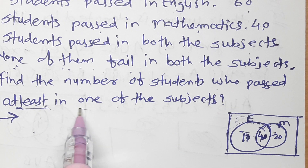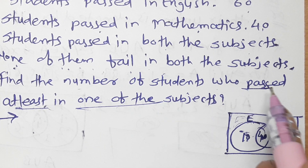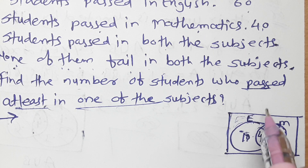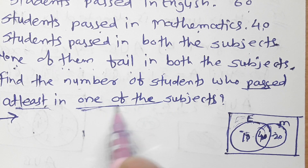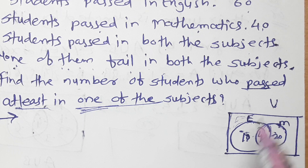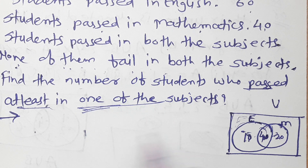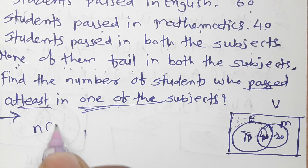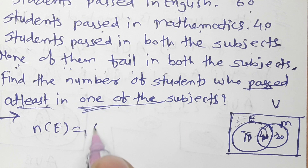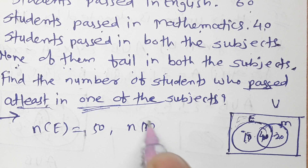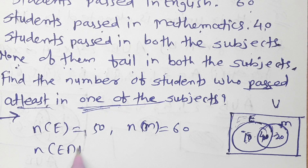We need to find those who passed in at least one subject, so we find the union. Number of E = 50, number of M = 60, number of English intersection maths = 40.